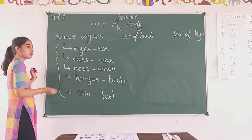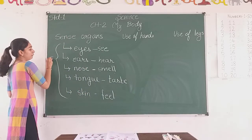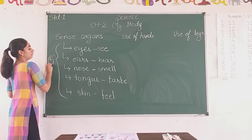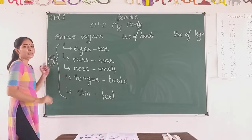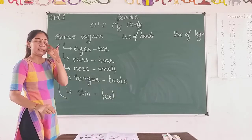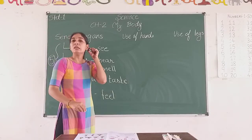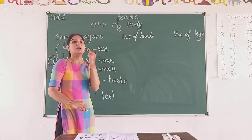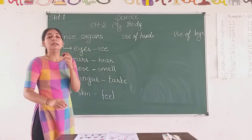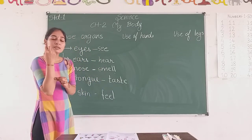How many sense organs do we have? Five. Which ones? Eyes, nose, ears, tongue, and skin.